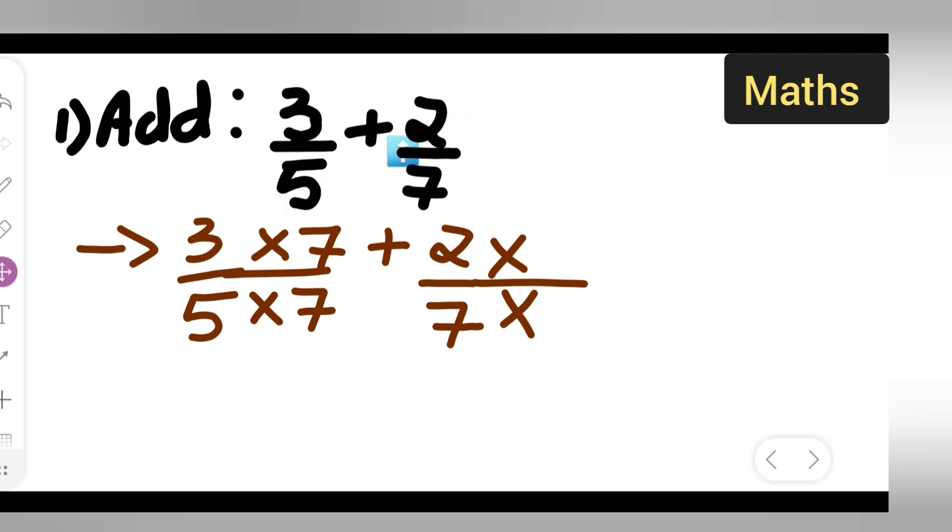Both with numerator and denominator, you'll have to multiply by 5 so that your denominator should be the same. Your denominators are different, right? You should get a same denominator. So 3 times 7 is 21, so you can write down equals 21 upon 35.